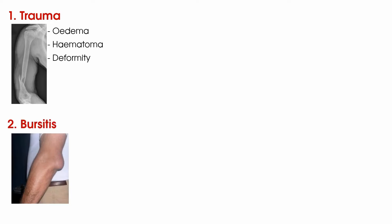Number two is bursitis, which put simply is inflammation of a bursa. Some bursae are more easily seen when they are inflamed. For instance, olecranon bursitis, or student's elbow, can be easily visualised as the bursa is right beneath the subcutaneous layer of the skin. Others are not so easily visualised due to their anatomy. For instance, subacromial bursitis, where the bursa in question lies in a relatively deep position underneath the acromion.